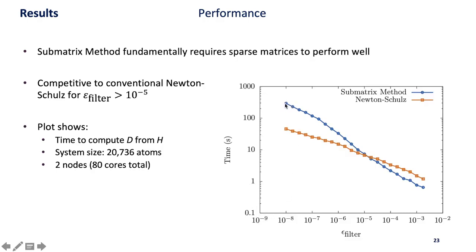But we see this drops off and around about 10 to the minus 5 epsilon filter there's a crossover point where the submatrix method starts to perform really well and better than the original Newton-Schulz approach.